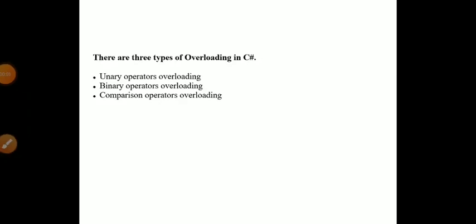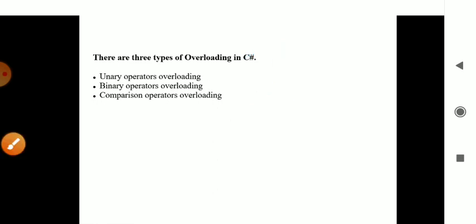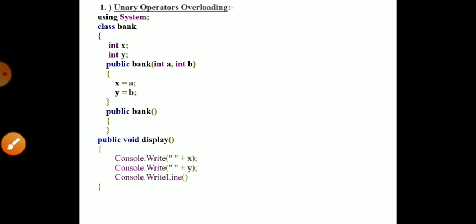Today we'll be learning about the concept of operator overloading. In the previous session we dealt with the types of overloading concepts present in C#. There are three types of operator overloading: one is unary type, another one is binary type, and another one is comparison operator overloading.